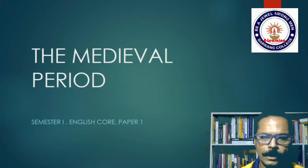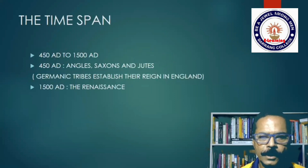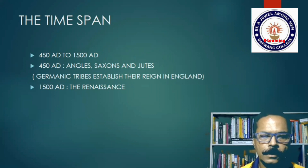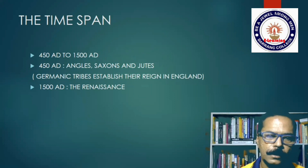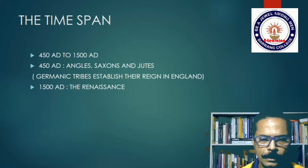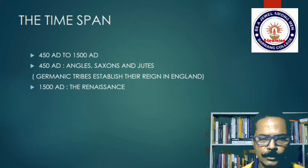Let's take a look at the time span — the time frame within which we can place the medieval period of English literary and social history. 450 is the beginning and 1500 is the end of this period: the middle of the 5th century to the beginning of the 16th century. Those are the demarcating lines.